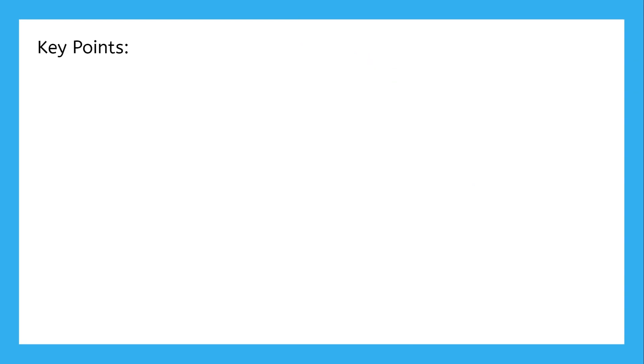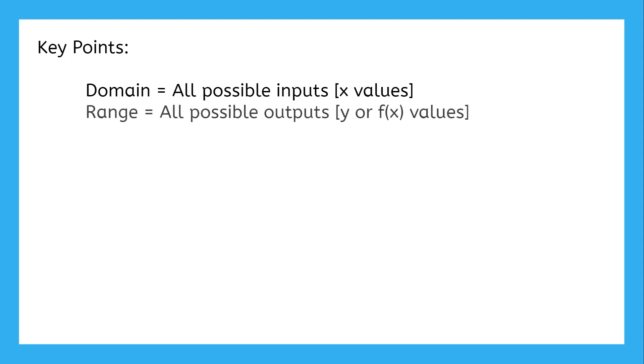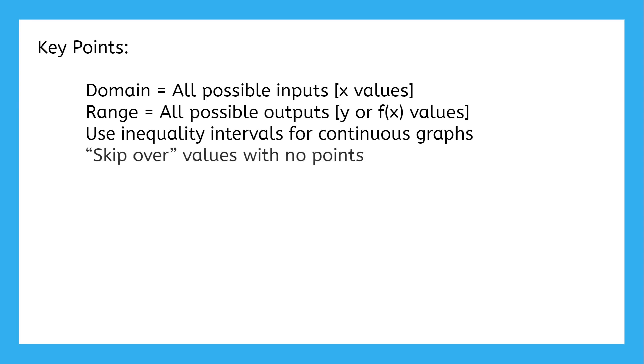Domain and range can be tricky concepts, but the key points to understand are: the domain is all the inputs with a point, the range is all the outputs with points. For continuous graphs, use inequality intervals instead of a list. And remember to skip over any inputs or outputs that don't have any points.